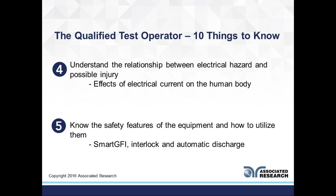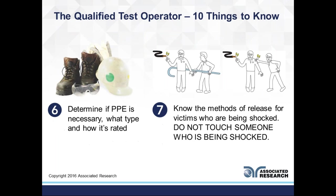Number six: determine if PPE is necessary. This goes back to OSHA requirements — what boundary are you in, what type of PPE is necessary, and making sure it's properly rated. Isolation boots, high-voltage gloves — those all have ratings, so it's important for your operator to know how to identify those, as well as eye protection and helmets. PPE is a major industry component needed to make sure your operator is safe when near hazardous situations.